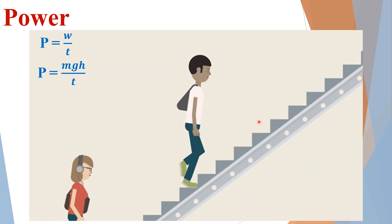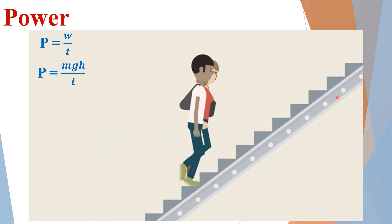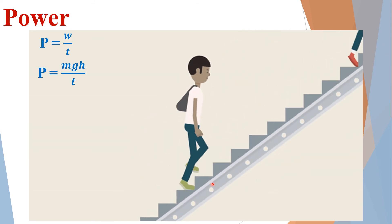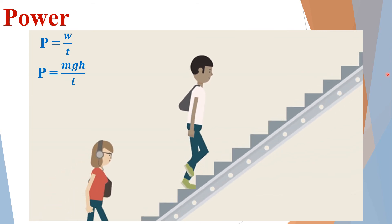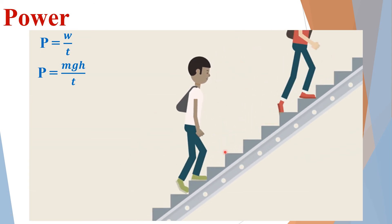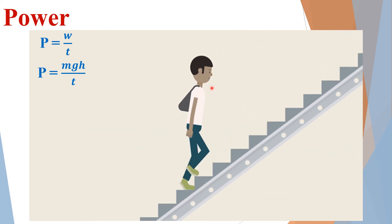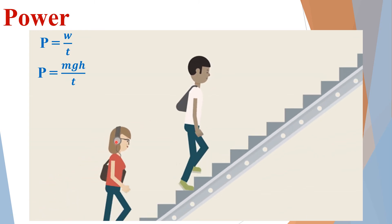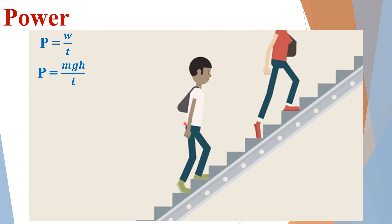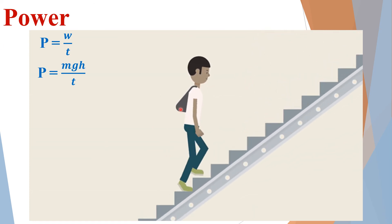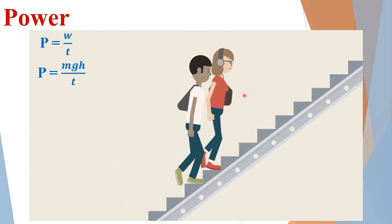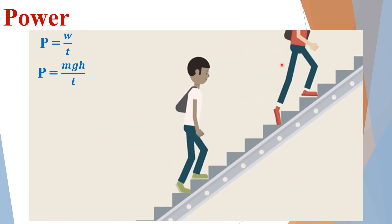Mr. Fahad and Miss Hania are moving upstairs. Their power can be calculated by measuring the total vertical height of the stairway and using a stopwatch for total time. Mr. Fahad takes much longer than Miss Hania. Because Mr. Fahad takes more time, his power is less, while Miss Hania takes less time, so her power is higher.